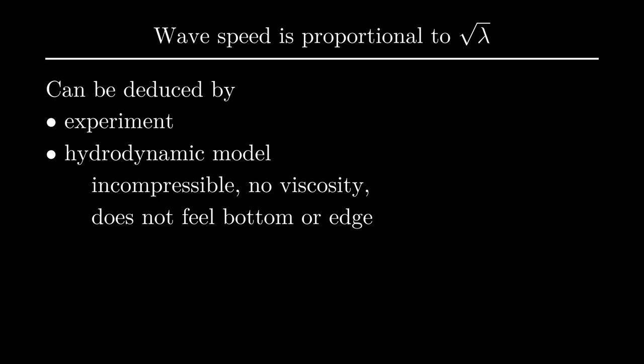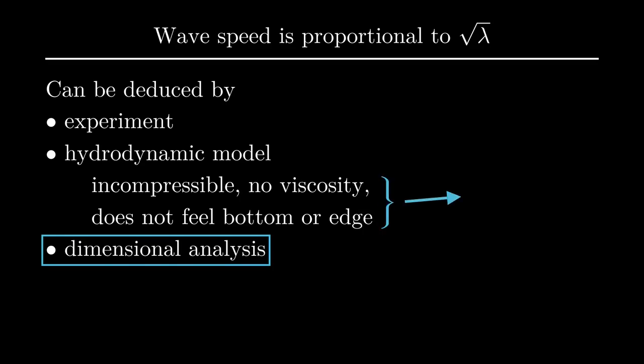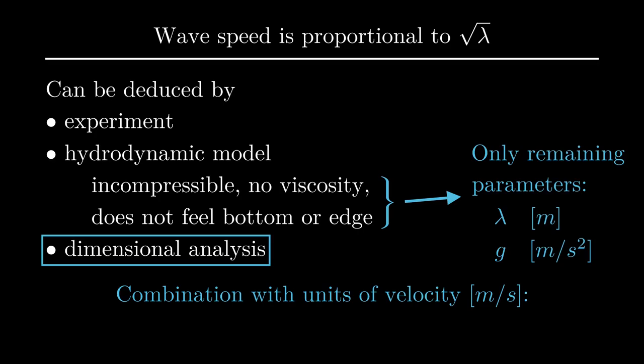There is also an explanation based on what units of measurement the quantities involved have. Physicists call this dimensional analysis. Because of the simplifying assumptions in the hydrodynamic model, the only variables that enter our model of a wave are its wavelength, in meters, and the gravitational constant, approximately 9.8 meters per second squared. The only way to combine these into a velocity, something with units of meters per second, is to multiply both of them and take the square root. This indicates that the wave speed is proportional to the square root of the wavelength times the gravitational constant.